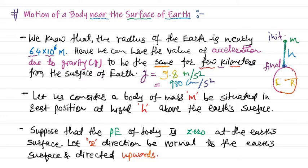Suppose the potential energy of the body is 0 at the earth's surface, since there is no height at the surface, so potential energy is 0. We define the x-direction as upward, normal to the surface of the earth — perpendicular to the earth's surface in the upward direction — that is what we consider the x-axis.